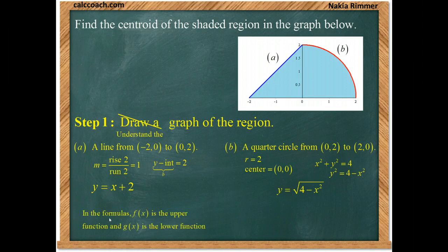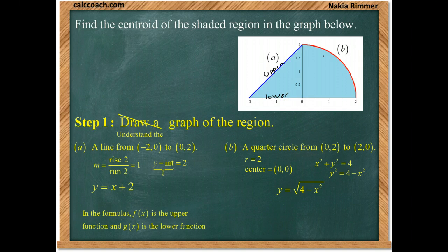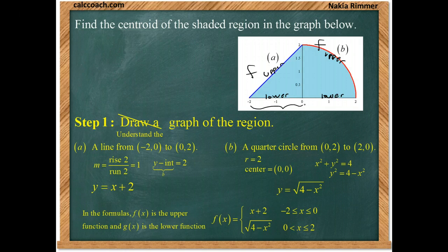Remember, we need an upper and a lower function. In the formulas, f of x is the upper function and g of x is the lower function. We break the graph into two parts where the upper function changes and the lower function is the x-axis in both cases. Think of it as a piecewise function: f is the line from negative 2 to 0, and the quarter circle from 0 to 2. The lower function for both is just y equals 0, which simplifies the formulas.